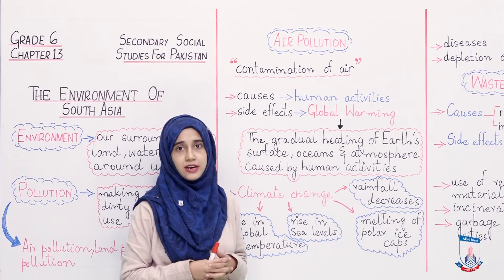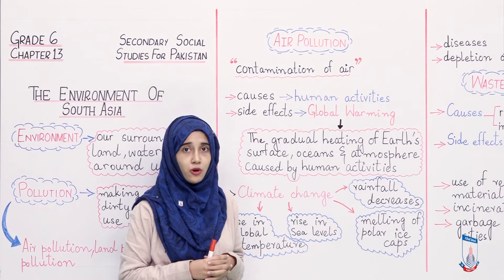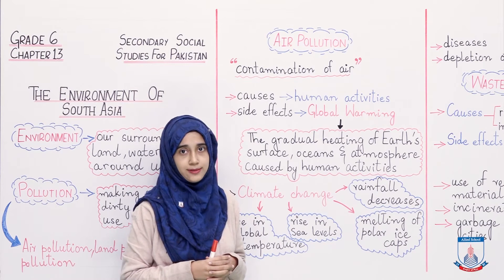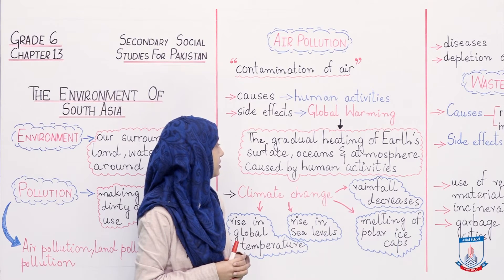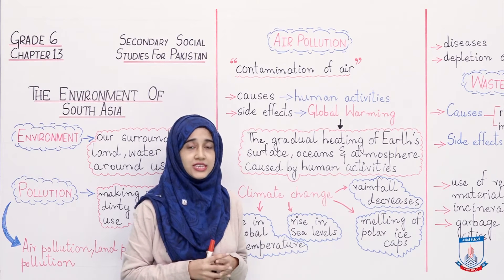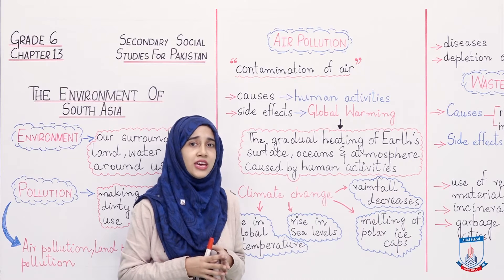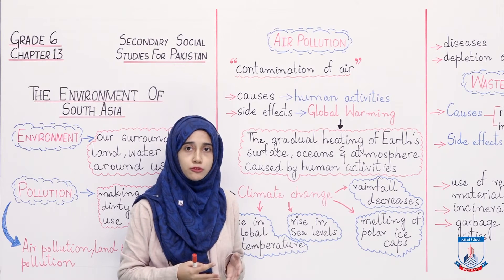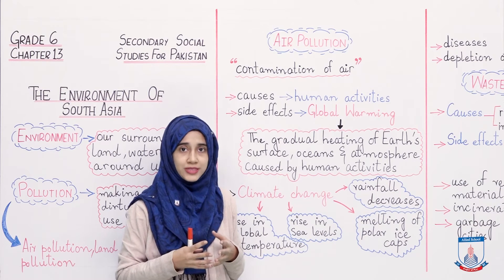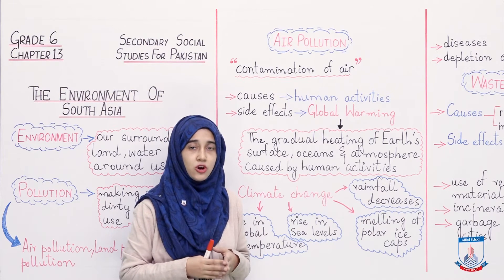What are the side effects of air pollution? The biggest side effect is global warming. Global warming is a very common term these days — you must have heard it often. Global warming is the gradual heating of earth's surface, oceans, and atmosphere caused by human activities. So the gradual warming up of our entire atmosphere, oceans and seas — we call this global warming.